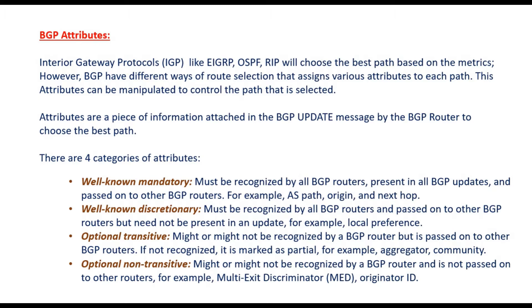There are four categories of attributes available in BGP: well-known mandatory, well-known discretionary, optional transitive, and optional non-transitive.